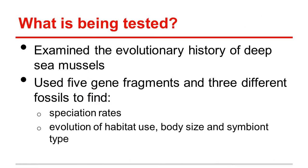Because of this, the team wanted to examine the evolutionary history that led to the rapid radiation of mussels into these environments. They used five gene fragments and three different fossils to find the speciation rates of these mussels over time. They also used fossils and evidence from extant species to determine the evolution of habitat use, body size, and symbiont type. They sampled 14 different species and sequenced their DNA through the use of a polymerase chain reaction, which creates thousands of copies of a particular gene that can be analyzed. Fossils were then used to calibrate the data to ensure accuracy.